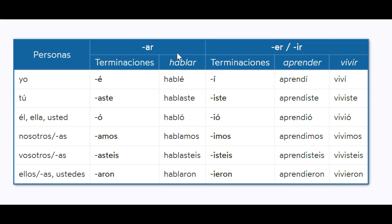So then what we do is we notice that we have an E — the ending E. So we add that E, that ending, to this habl, and the result of that would be hablé. Can you do that math with the next one? It would be hablar minus the R, so habl, and then add the -aste, so it would be hablaste.